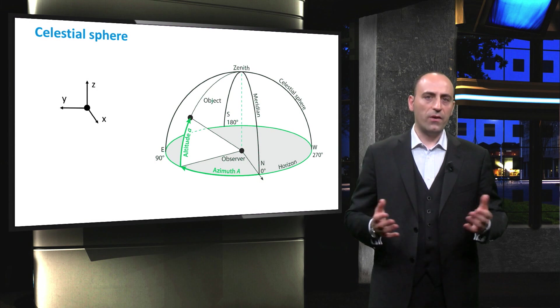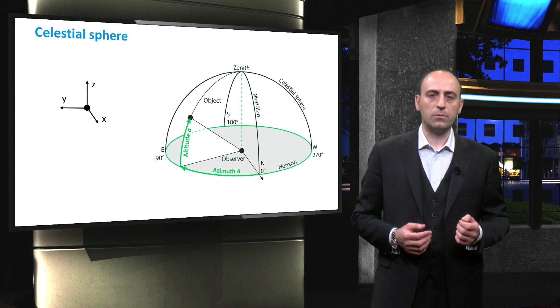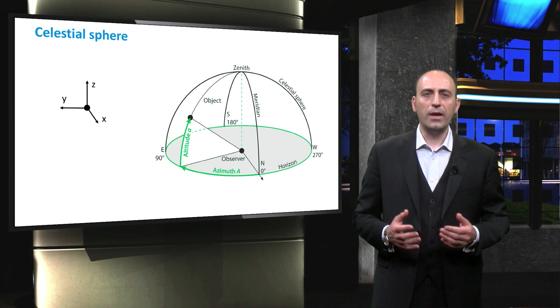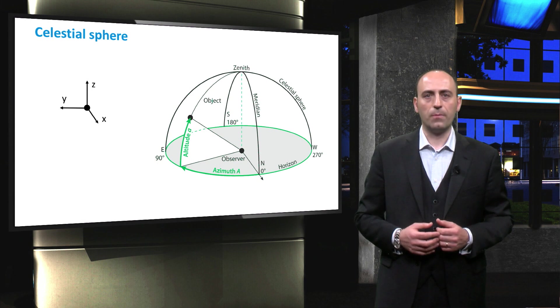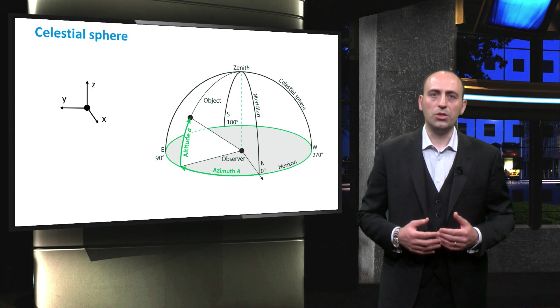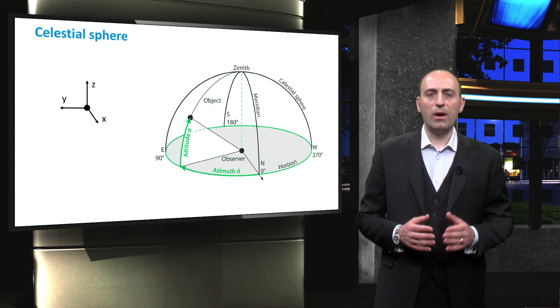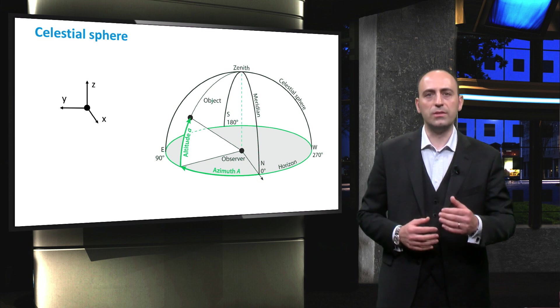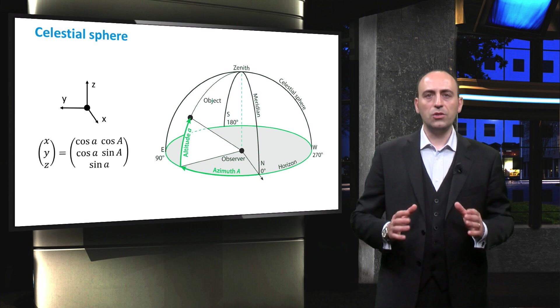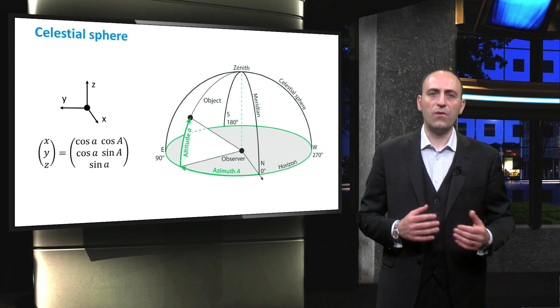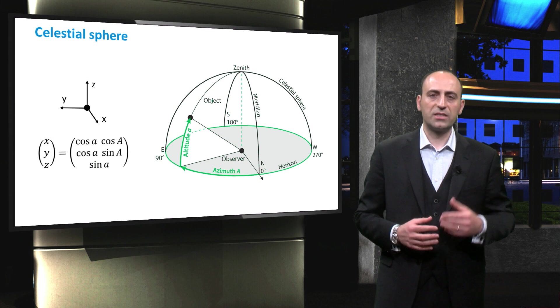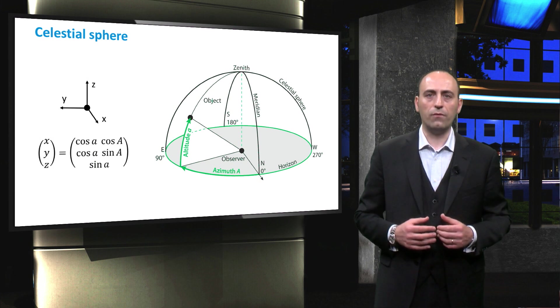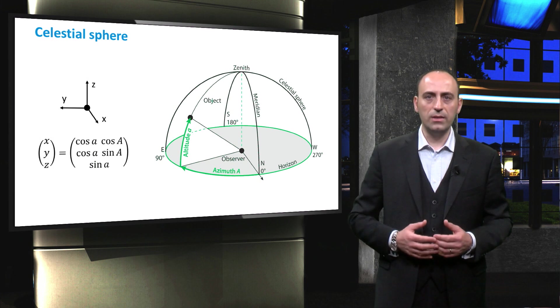Instead of using the spherical coordinates a, small and A, capital, we can also use Cartesian coordinates, x, y and z. The principal direction, which is the arrow pointing north, is parallel to x, while z axis is pointing towards the zenith. The Cartesian coordinates are connected to the spherical coordinates via this simple trigonometric relation that expresses the Sun position in three coordinates instead of two.